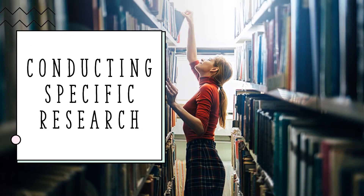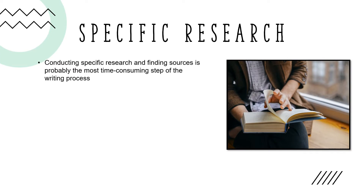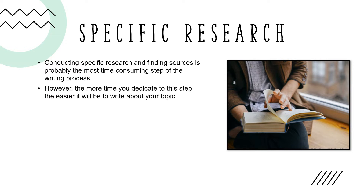Once you've completed the steps necessary to prepare for researching, as discussed in part one of this series, you can begin conducting specific research on your topic. Conducting specific research and finding sources on your topic is probably the most time-consuming step of the writing process. However, the more time you dedicate to this step, the easier it will be to write about your topic in the drafting step.